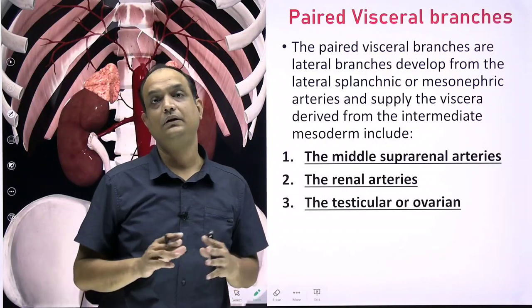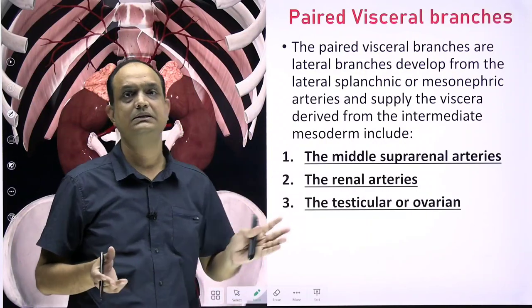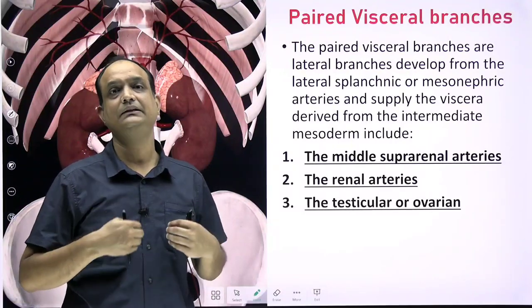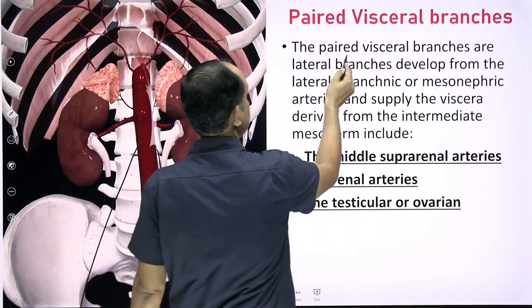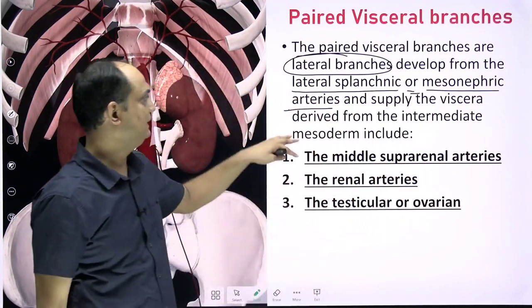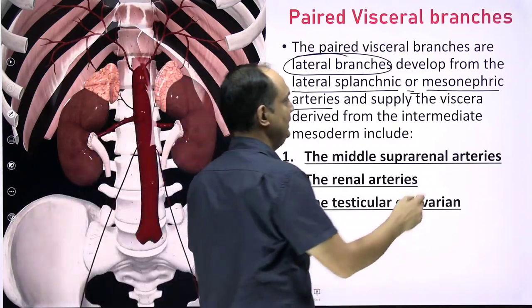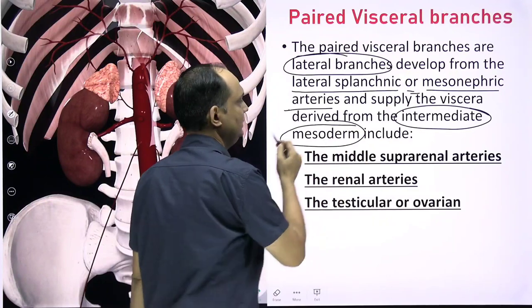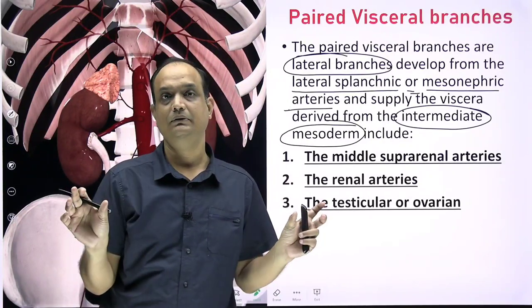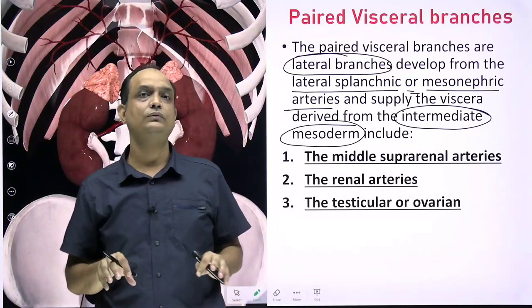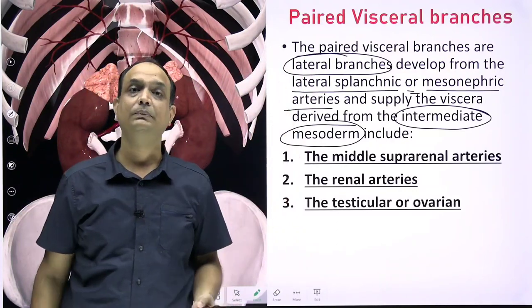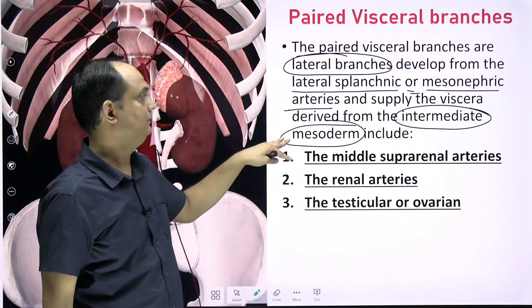The paired visceral branches are the lateral branches, arising from the sides of the abdominal aorta. They develop from lateral splanchnic or mesonephric arteries and supply viscera derived from the intermediate mesoderm. The intermediate mesoderm forms the urogenital system. So paired visceral branches supply derivatives of the urogenital ridge: the adrenal glands, the kidneys, and the gonads.